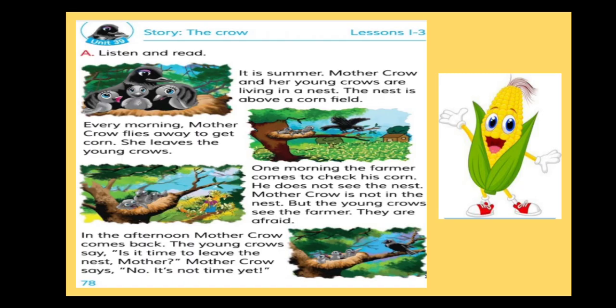Can you see the picture? How many crows are there? Yes, there are four crows — one mother crow and three baby crows. Now let's read the story. It is summer. Mother crow and her young crows are living in a nest.